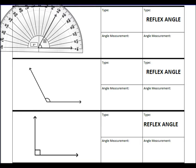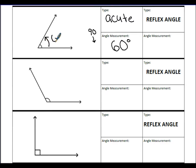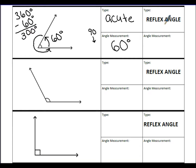Lining up the protractor and counting from 0 to 60 degrees — this angle measures 60 degrees. Since 60 is less than 90, it is an acute angle. The reflex angle is the larger angle going around the outside: 360 minus 60 equals 300 degrees for the reflex angle.